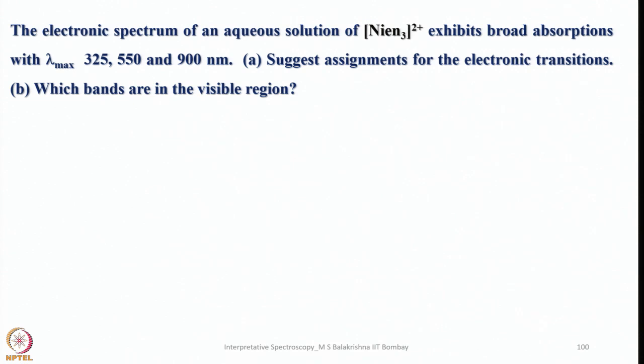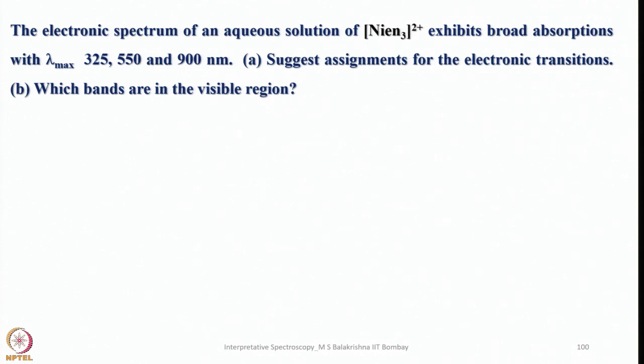All these things can be done easily provided you identify the oxidation state in the metal complex, then find out what electronic configuration is there, simply find out L value, S value, and then J value if needed, and you should be able to write the ground state term symbol. Now, the electronic spectrum of an aqueous solution of tris-ethylenediamine nickel 2+ exhibits broad absorption with lambda max at 325, 550, and 900 nanometers. First question: suggest assignments for the electronic transitions. Second: which bands are in the visible region? For this one, recollect the Orgel diagram for d2 or d8 system - they are essentially the same. If you recall, 3 transitions will be there.